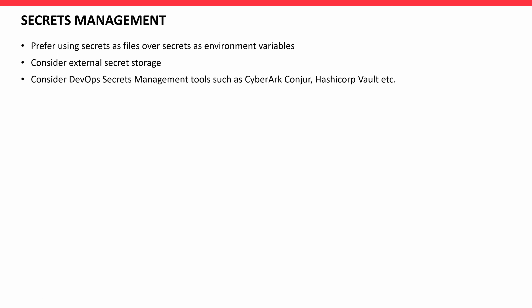For secrets management: prefer using secrets as files over secrets as environment variables, as environment variables can spread in many places. Consider external secret storage, such as a NAS or SAN mount for locally used secrets. Also consider DevOps secret management tools such as CyberArk Conjur and HashiCorp Vault, which store secrets in a repository and distribute them on a need-to-know basis.